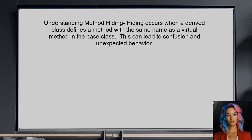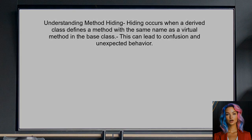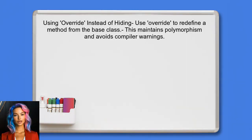To address the warning about hiding virtual methods, the user should first understand the implications of method hiding in object-oriented programming. Hiding occurs when a derived class defines a method with the same name as a virtual method in its base class. The user should consider using the reserved word override instead of hiding the method. This ensures that the derived method is recognized as an override of the base class method, maintaining polymorphism.